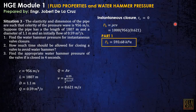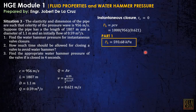This is for instantaneous closure. Take note there are cases here — I define these as two cases: instantaneous/rapid closure and slow closure. For number two, how much time should be allowed for closing a valve to avoid water hammer? To avoid water hammer, the time required is T equals 2L over C. That is the formula.